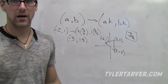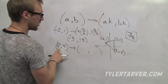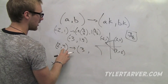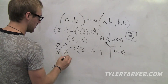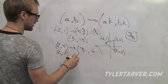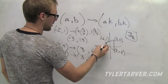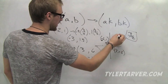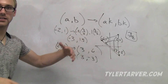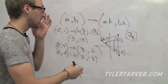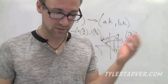For vertex (2, 4): 2 times 3 over 2 is 3, and 4 times 3 over 2 is 6. For vertex (2, negative 2): it becomes (3, negative 3). So our new image plots at (negative 3, 1.5), (3, 6), and (3, negative 3). The new image is bigger than the original because we multiplied by a number greater than 1 — 1.5 — so it's an enlargement. Just remember, you multiply the scale factor times both the X and Y coordinates.